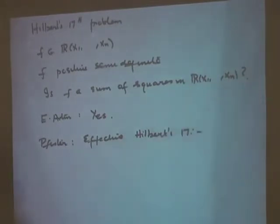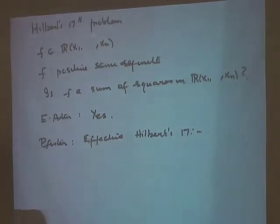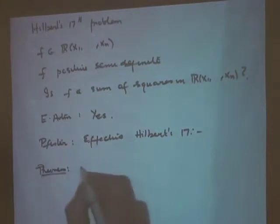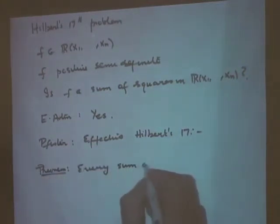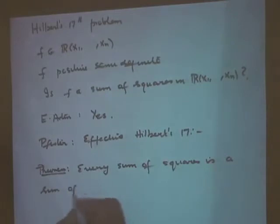What Pfister shows is that if you have n variables, then every sum of squares can be expressed as a sum of 2^n squares — that is the maximum number required. So the theorem is: every sum of squares is a sum of 2^n squares in R(x1, ..., xn). Let me just briefly sketch how the discussion of Pfister's theory leads to this effective version of Hilbert's 17th problem.